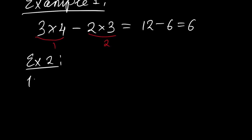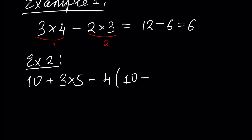The second example: 10 plus 3 times 5 minus 4, then 10 minus 2 times 3 plus 1, plus 5.